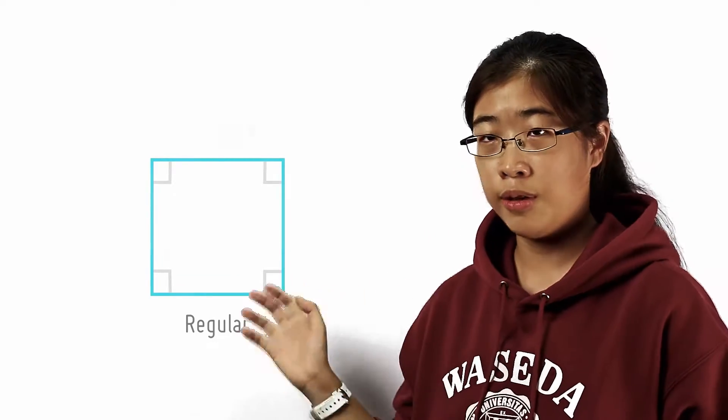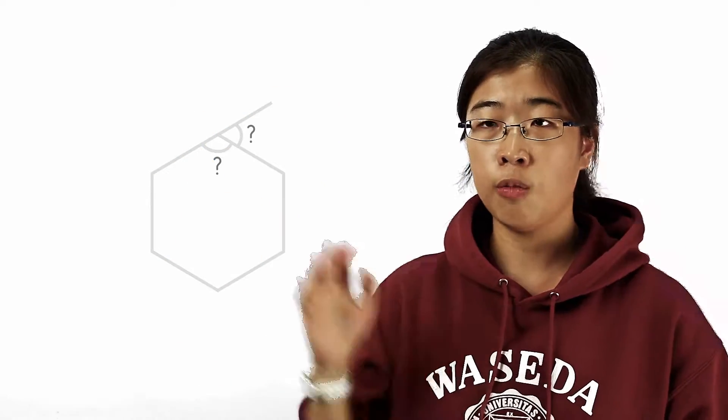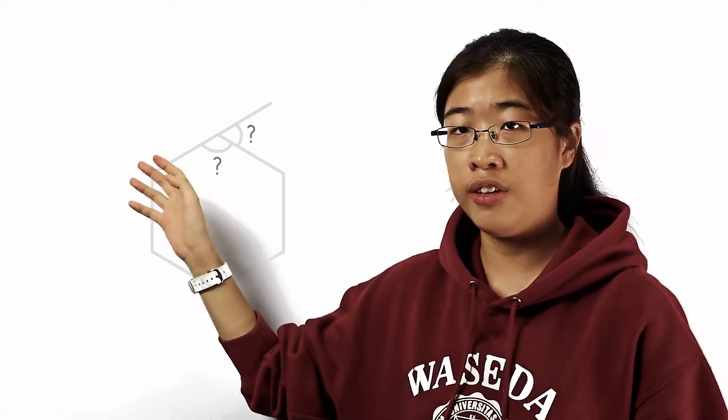Now, take a look at this question. We have a regular hexagon and we want to find one of its interior angles and one exterior angle of it.